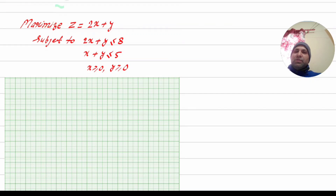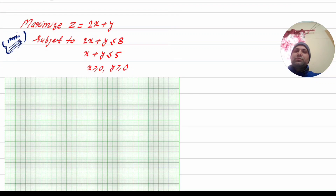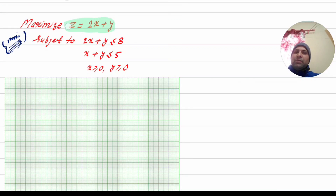In this case, we will solve the minimization problem. There are two types and categories. The objective function is first: Z is equal to 2x plus y. This is the value we are maximizing.